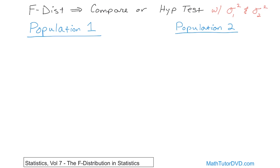In each population you're collecting data or measuring something. As a concrete example, let's think about IQ, which is a measure of intelligence. You go and give everyone in population one an IQ test — they're all going to get different values. And if you give population two the same IQ test, they're all going to get different values too.